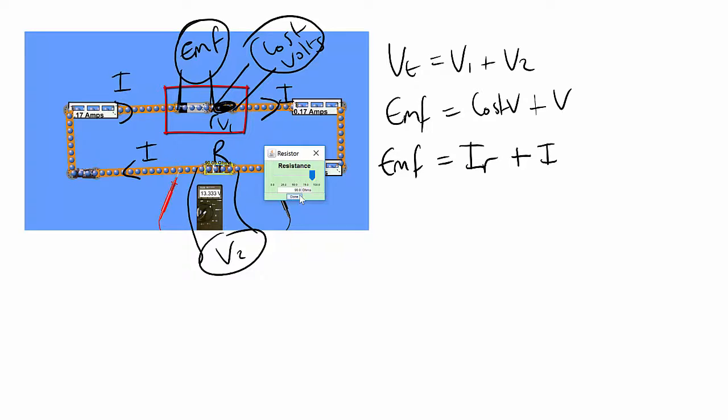And the external resistance, we usually use the symbol big R. So we can rephrase this again as EMF equals I, open brackets, little r plus big R.